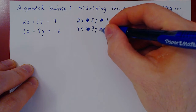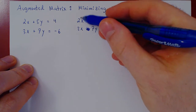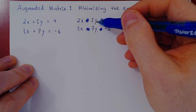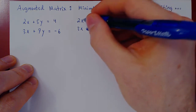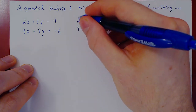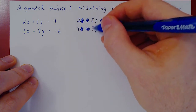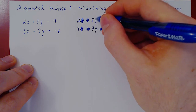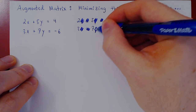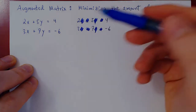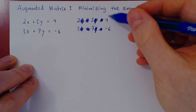If we are consistent in how we order the variables — say all of the x's first and all of the y's second and so forth — we can also drop the variables. The coefficients 2 and 3 are for x, and the coefficients 5 and 7 are for y. As long as we keep them in the same order, we don't need to write the variables.